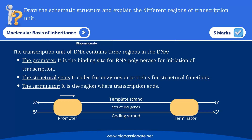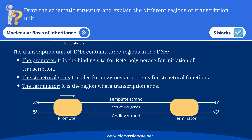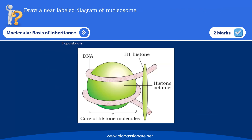Draw a schematic structure and explain the different regions of a transcriptional unit. You will draw two lines representing the two strands of DNA — the template strand and coding strand — along with the promoter, structural genes, and terminator. It's simple and you get five marks. Another two-mark question: draw a neat labelled diagram of a nucleosome.